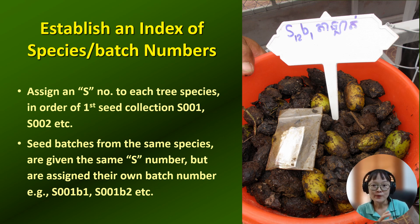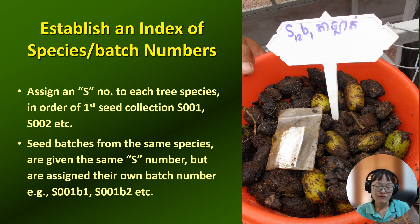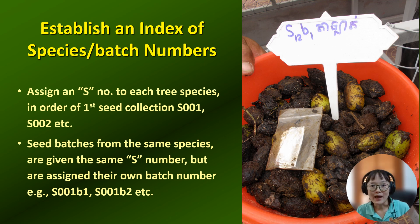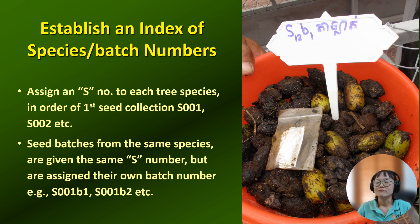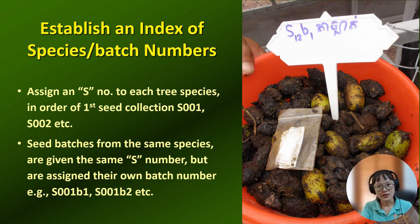For example, for FORRU, we use B to represent batch number. So if you collect seed from the first species and you have several batches, you can go from S001 B1, B2, B3, and so on and so forth. Those S numbers that we assign to the species will match the tree species' local name and also the species name.